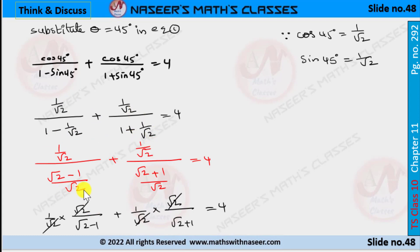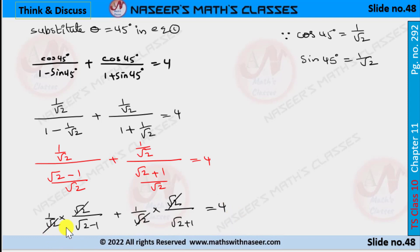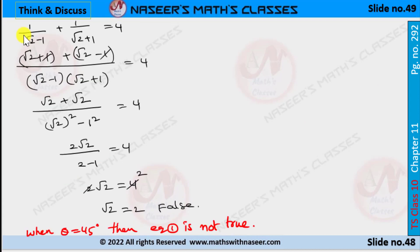Taking LCM in the denominator: 1 − 1/√2 = (√2 − 1)/√2 and 1 + 1/√2 = (√2 + 1)/√2. Writing the reciprocal of the denominator gives (1/√2) × (√2/(√2 − 1)) + (1/√2) × (√2/(√2 + 1)) = 4. Cancelling √2, we get 1/(√2 − 1) + 1/(√2 + 1) = 4.